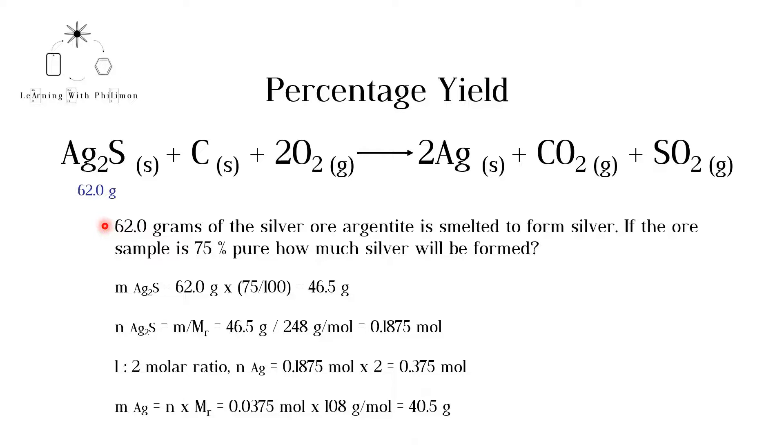As the sample is only 75% pure, only 75% of the sample will react to form silver. Therefore, we multiply 62.0 grams by 75%, which is equivalent to 75 over 100, or 0.75. 46.5 grams of the sample is argentite.